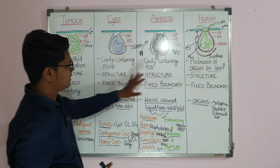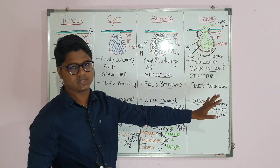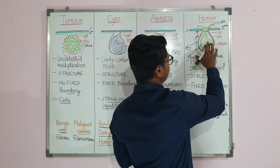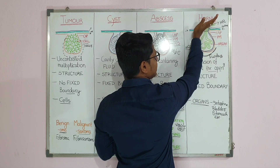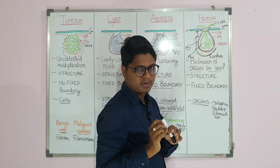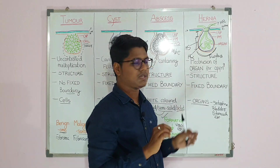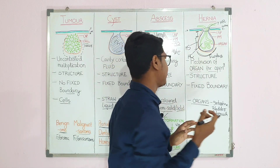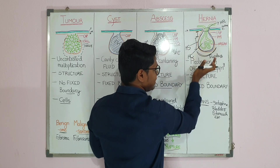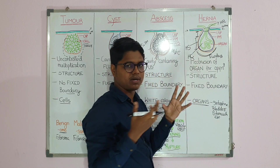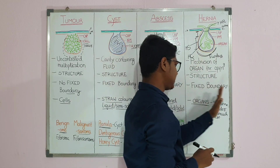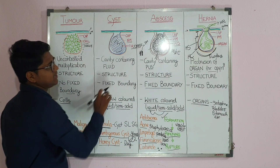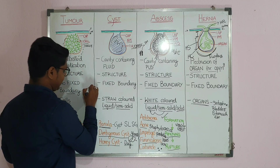Now, how will you diagnose these conditions when you find any swelling? First, differentiate hernia. You can push the hernial content back inside the abdomen and feel the hernia ring. Hernia can be reducible or irreducible — irreducible hernia usually happens in long-standing cases. If you push the content and it easily goes back into the abdomen and you can feel the hernia ring, you can tell this is a hernia.